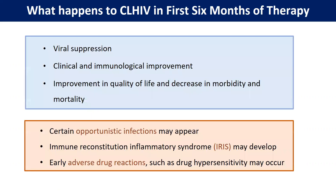When we start ART, what is the normal natural history of disease that is going to happen? With antiretroviral therapy, there will be viral suppression and there will be clinical and immunological improvement. There will be improvement in quality of life and decrease in morbidity and mortality. However, some opportunistic infections that were suppressed due to decreased immunity — when immunological improvement occurs, the manifestation of those opportunistic infections can occur, leading to the syndrome known as IRIS — immune reconstitution inflammatory syndrome.